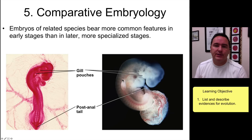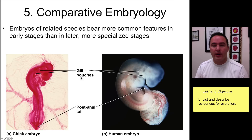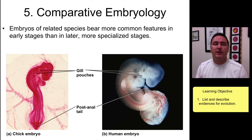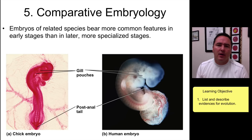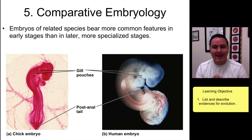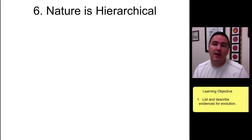Number five: comparative embryology. When you look at organisms in their early embryological stages they are very similar. For example, a chicken and a human both have gill pouches and post-anal tails in early embryological stages and look very similar. As development continues, the differences begin to appear. The fact that early stages look the same across very different organisms is powerful evidence for evolution.